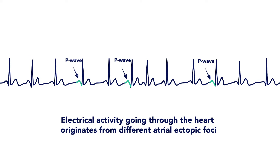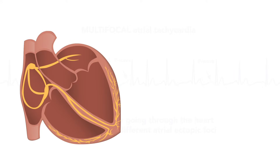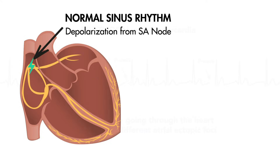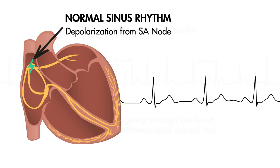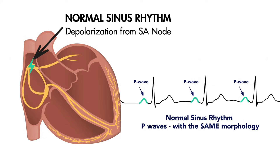That is, electrical activity going through the heart originates from different atrial ectopic foci, hence the name multifocal atrial tachycardia. This is in contrast to normal sinus rhythm, where the origin of electrical depolarization is always in the sinoatrial node, reflected on your rhythm strip as P waves with only one morphology.